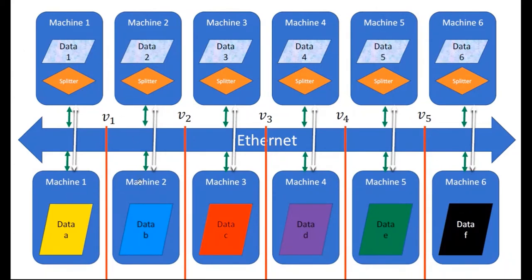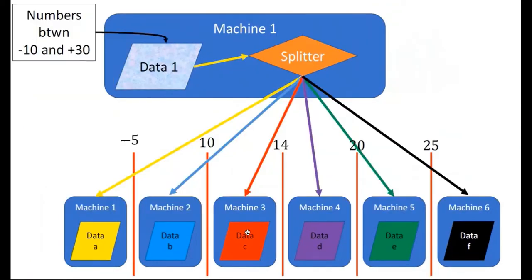In this situation we are having input in six different machines, and the intermediate structure that I am taking here is another six different machines. I am assuming that the data that I am having is between the range from -10 to +30.